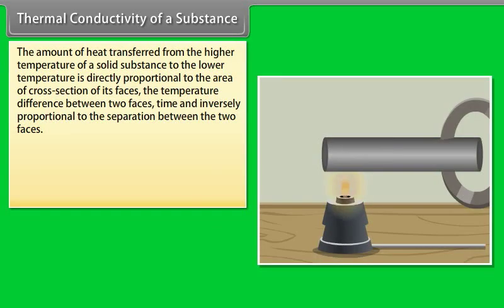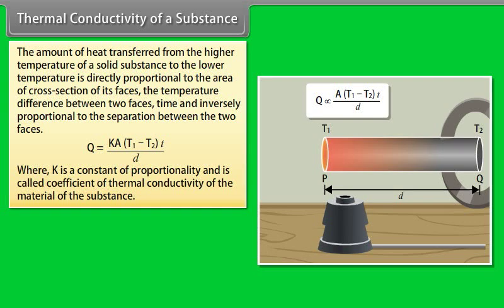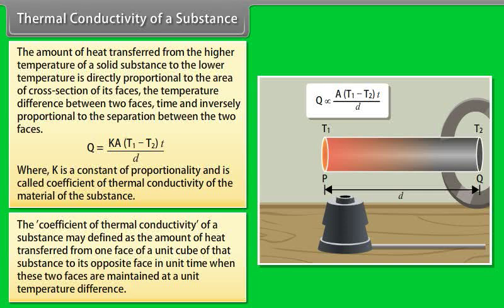Thermal conductivity: The amount of heat transferred from the higher temperature of a solid substance to the lower temperature is directly proportional to the area of cross-section, the temperature difference between two faces, and time, and inversely proportional to the separation between the two faces. It gives Q = KA(T1 − T2)·t/D, where K is the coefficient of thermal conductivity of the material. It is defined as the amount of heat transferred from one face of a unit cube to the opposite face in unit time when the two faces are maintained at a unit temperature difference.